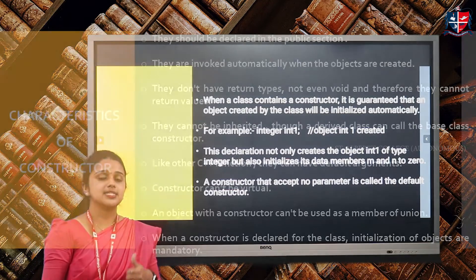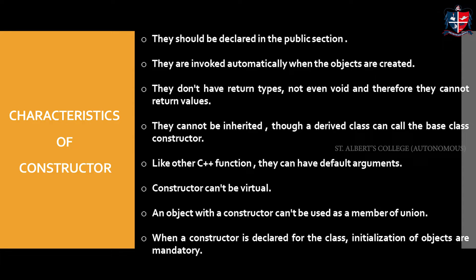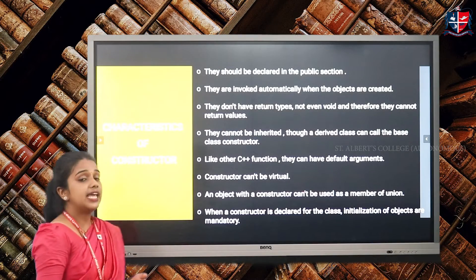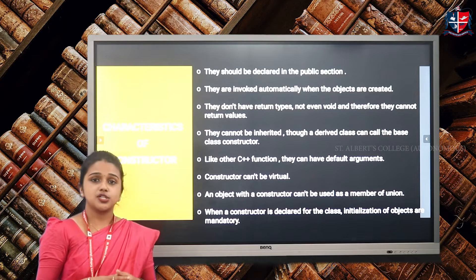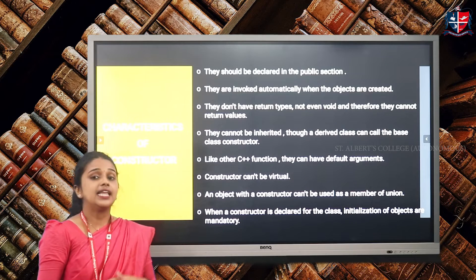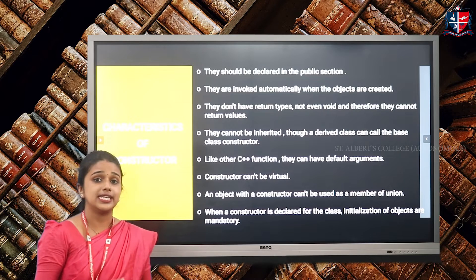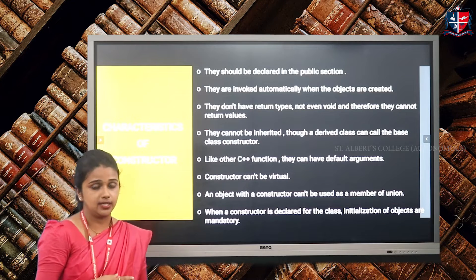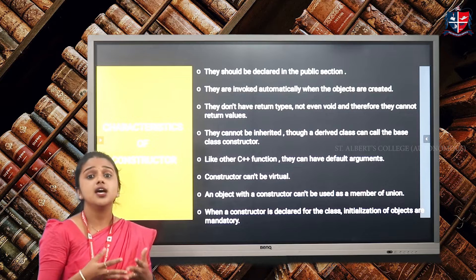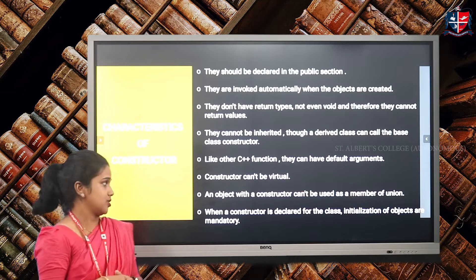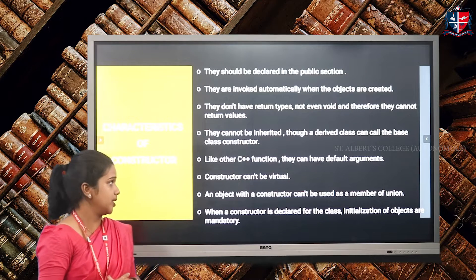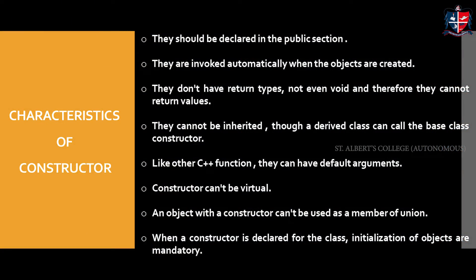This is the first type of constructor: the default constructor. Now we will discuss the characteristics of the constructor. First, constructors should be declared in the public section. Second, they are invoked whenever objects of the class are created. Third, unlike normal functions, constructors do not have any return type and do not return any value. Fourth, they cannot be inherited — since this is a member function, it cannot be inherited. However, derived class members can access the base class constructor.